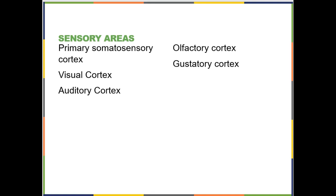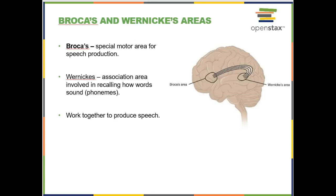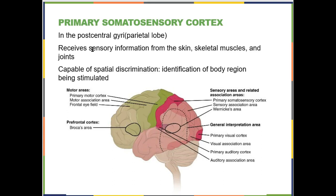Moving on to the sensory areas. First up, the primary somatosensory cortex — located in the postcentral gyrus, the very anterior portion of your parietal lobe. This is where all of your general sensation is perceived by your brain: everything coming from skin, skeletal muscles, and joints — hot, cold, touch, stretch receptors, and proprioceptors located in your muscles and joints that let your body know which muscles are stretched versus contracted and how much tension there is across your joints.